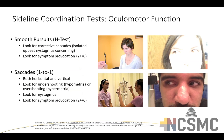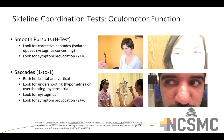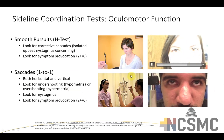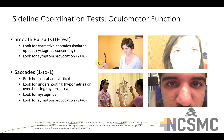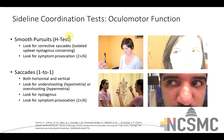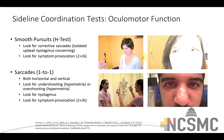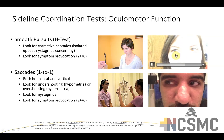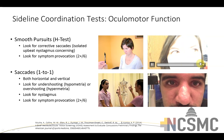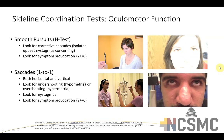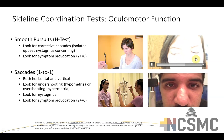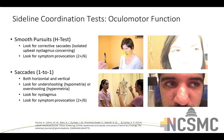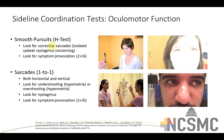Next, look at ocular motor function using the VOMS test. First, assess smooth pursuits — have the athlete follow an object moving slowly across their visual field with just their eyes. Often called the H test because of the shape you trace. Look for accuracy and smooth tracking. In a concussed athlete, you may see nystagmic jittering with saccades correcting frequently as they try to follow the object — that's a positive finding, as is provocation of any symptoms.